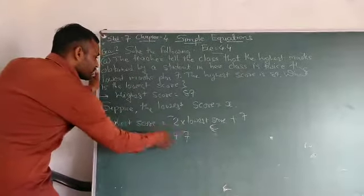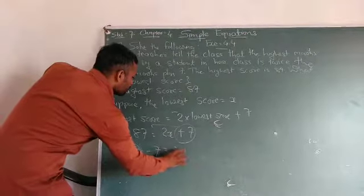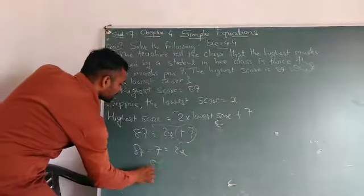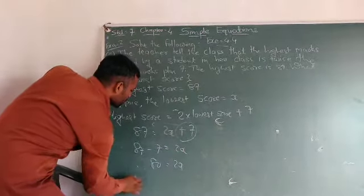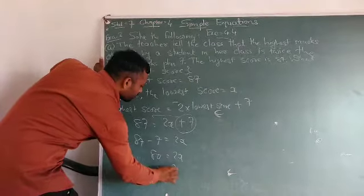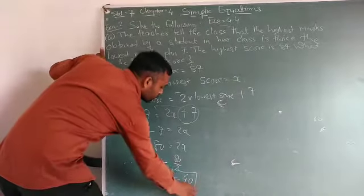So now plus 7 moves to this side. 87 minus 7 is equal to 2x. 87 minus 7 is 80, equals 2x. So x is equal to 80 divided by 2. So x is equal to 40.